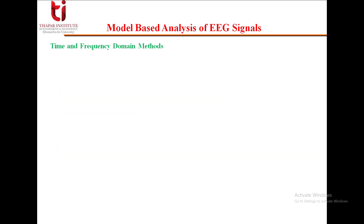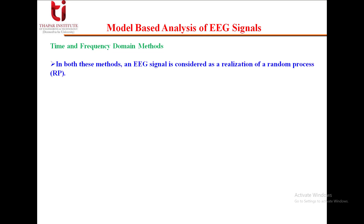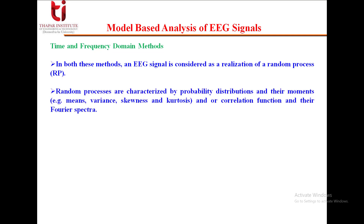There can be time and frequency domain methods for the analysis of EEG signals. Both these methods consider an EEG signal as a realization of a random process. Random processes are characterized by probability distributions and their moments — for example, mean, variance, skewness, kurtosis — or the correlation function and their Fourier spectra.